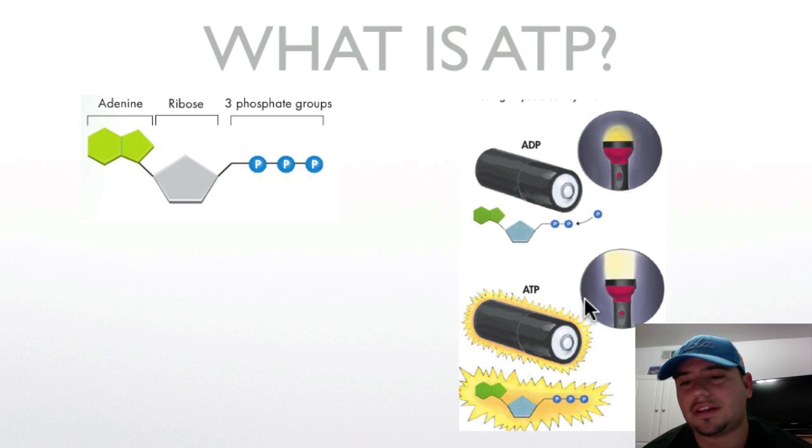But by adding another phosphate, look what happens. We make this molecule very energetic. Now it becomes ATP by adding that phosphate. So adenosine triphosphate, three phosphate groups. And now look how much energy it has. It can do a lot of work. It can light up your room now.